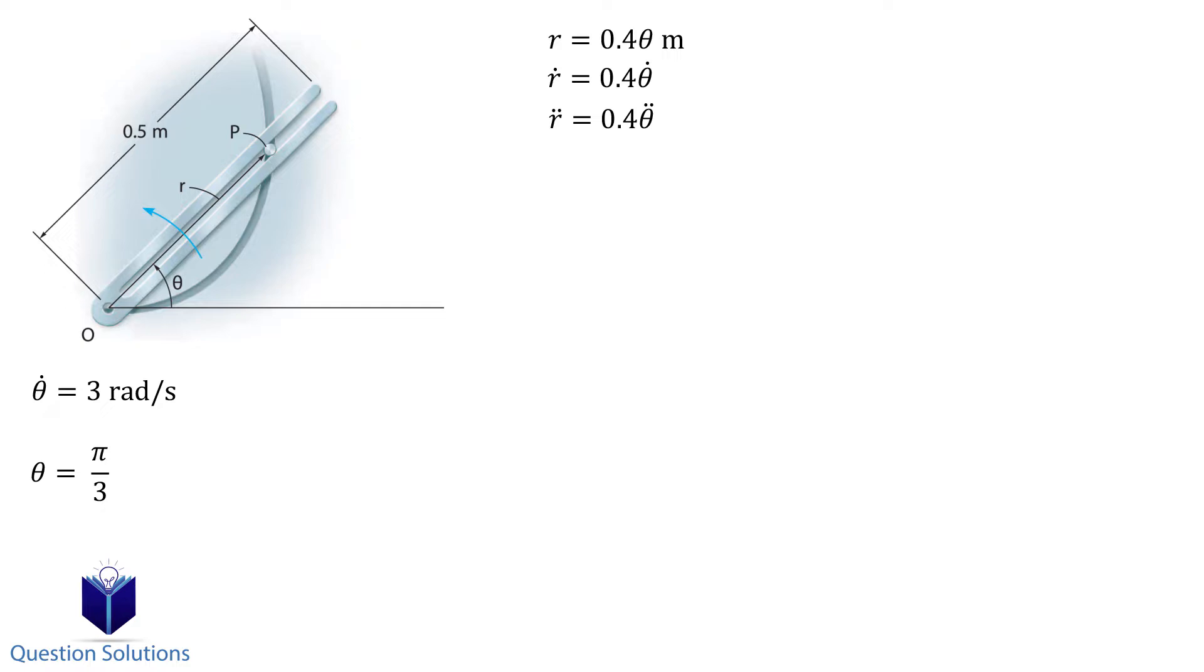Now we can figure out the radial component of velocity using this equation. Let's substitute the first time derivative and the value of angular velocity.